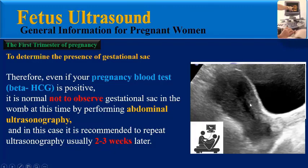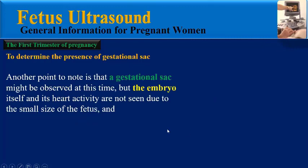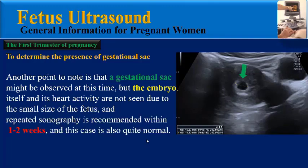As you can see in this image, we can see the womb but no gestational sac inside it. The physician reports: 'I did not see a pregnancy sac; please repeat ultrasonography two to three weeks later.' Another point to note is that a gestational sac might be observed but the embryo itself and its heart activity are not seen due to the small size of the embryo. Repeated sonography is recommended within one to two weeks, and this finding is also quite normal.